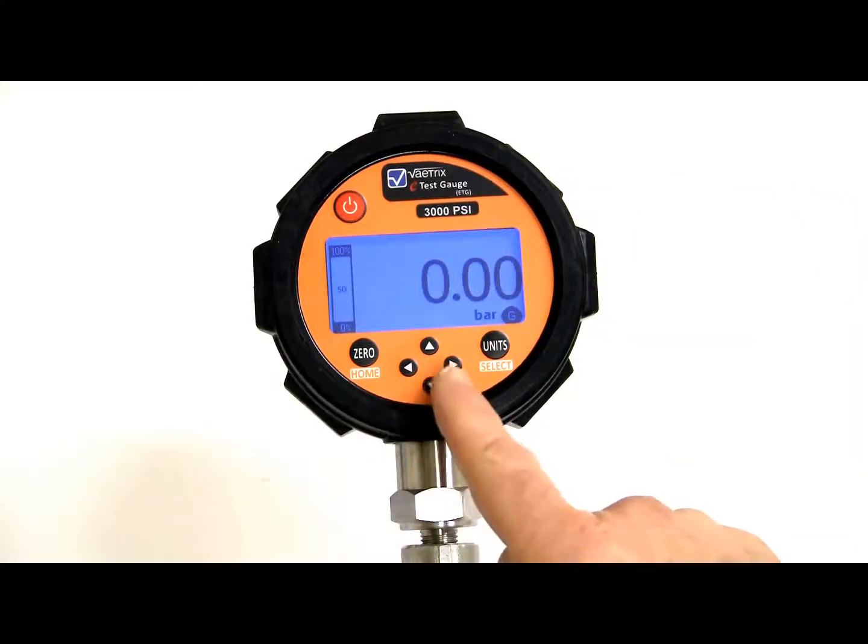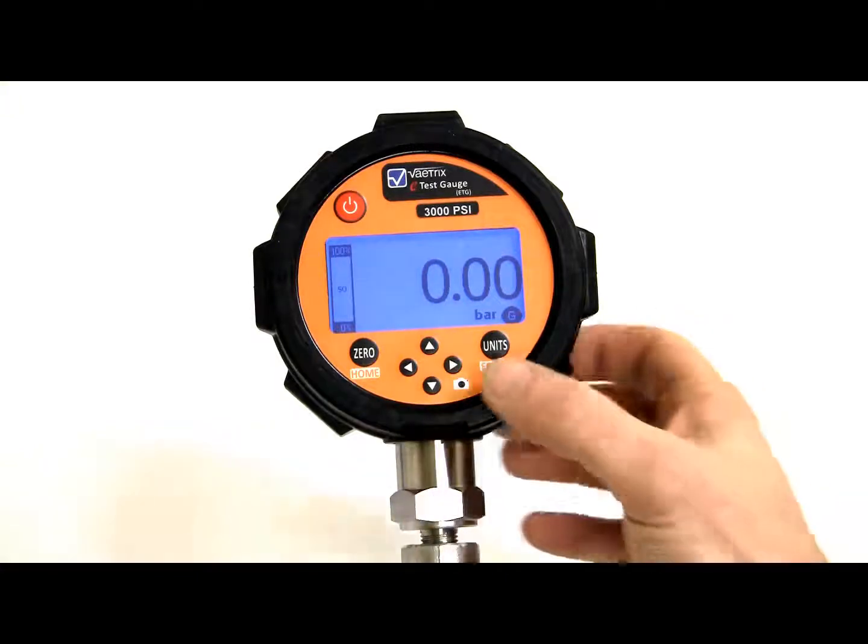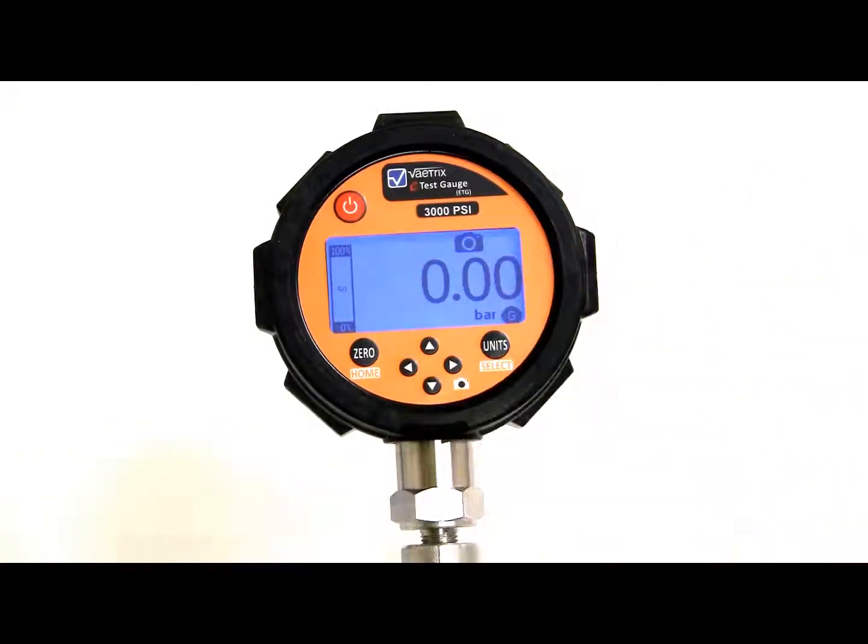Another neat feature in measure mode is the ability to take live snapshots of readings with date and time. So right now, I can take a snapshot. You see the camera icon flash, that means I grab that, store that to memory. So it saves you from writing the reading down with pencil and paper.